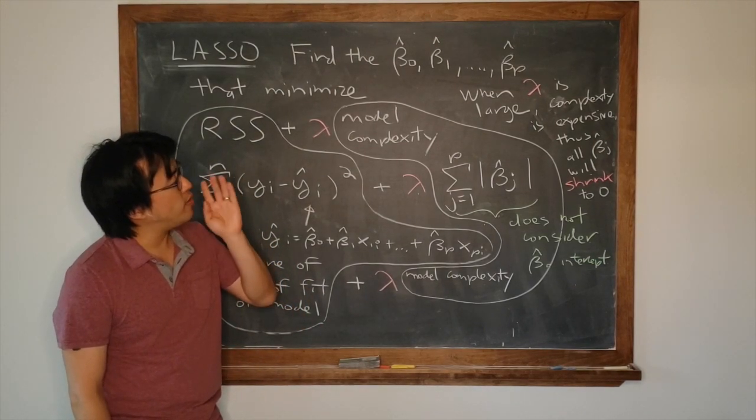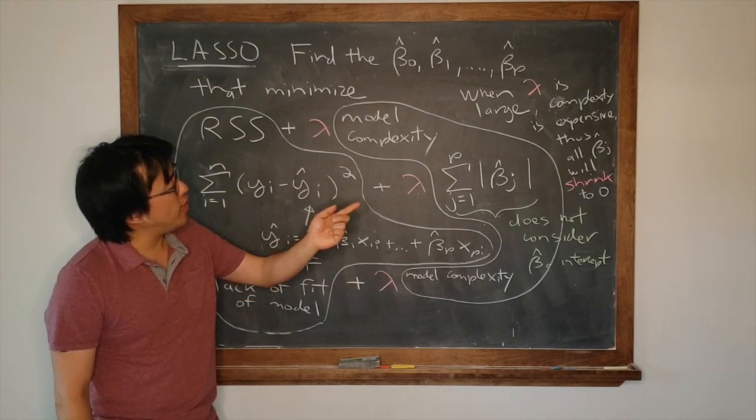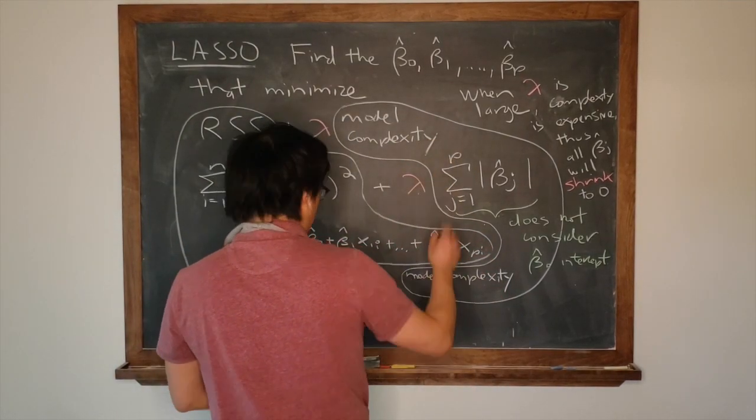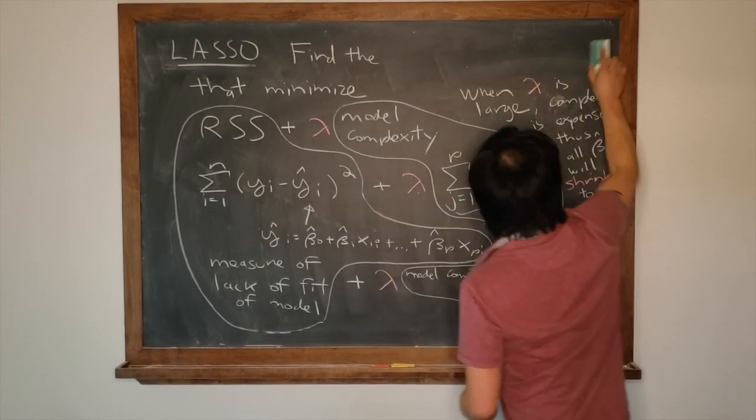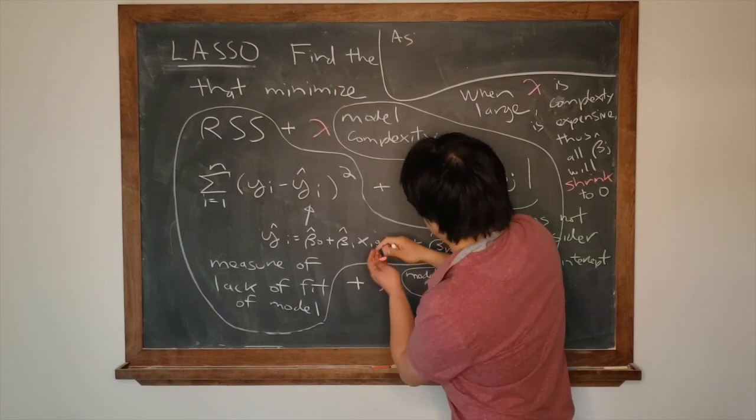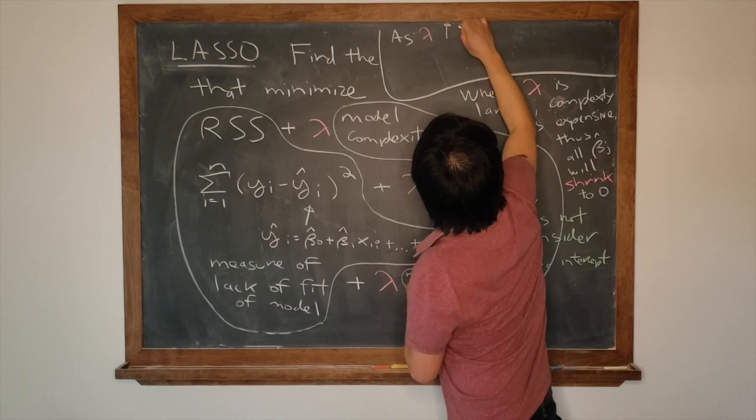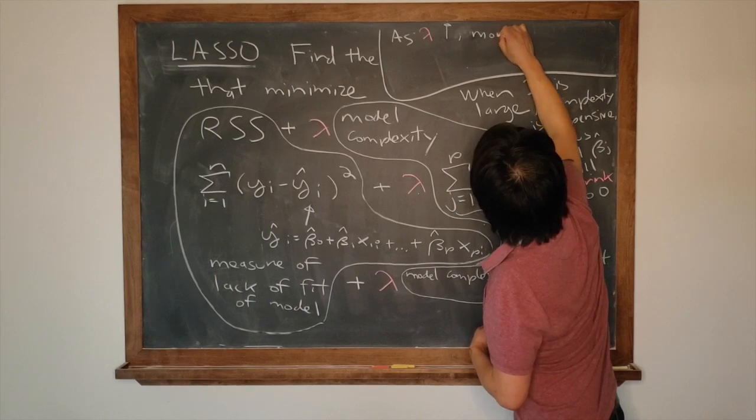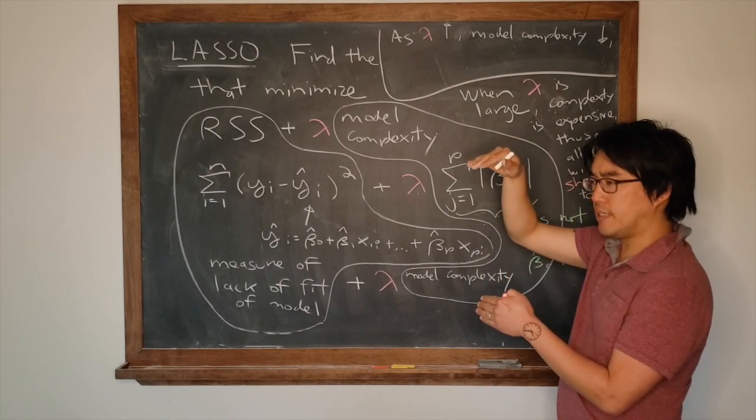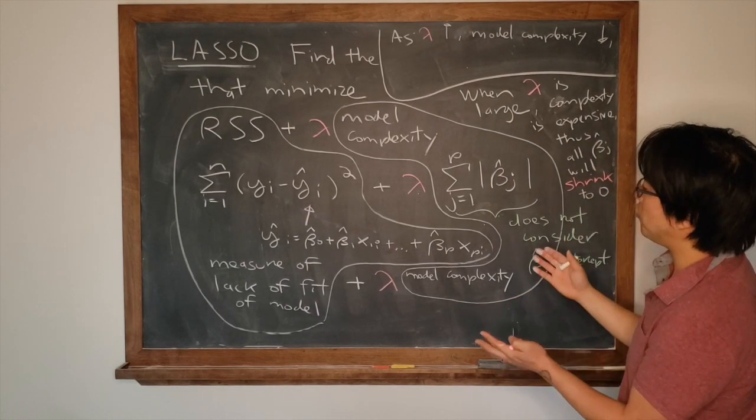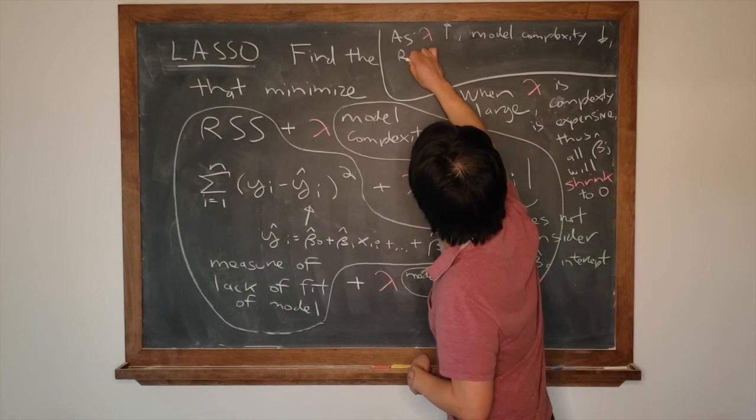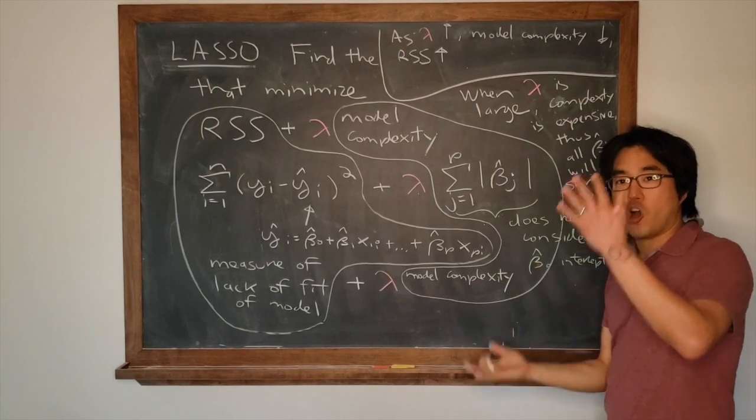Again, RSS and model complexity go against each other. And what sets the balance between the two? It's the lambda. When you have large lambda values, complexity goes down. Now you can see folks, by the way, that I kind of struggle with this. I always have to think about this.